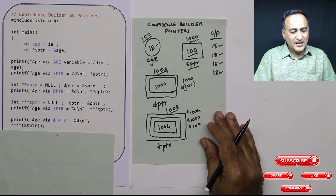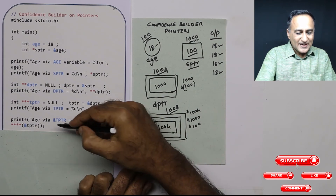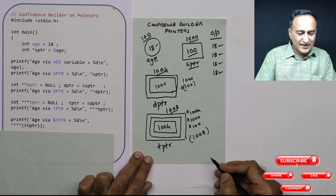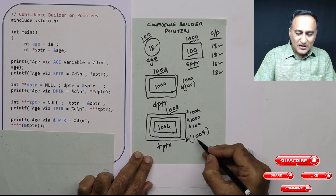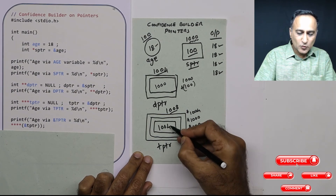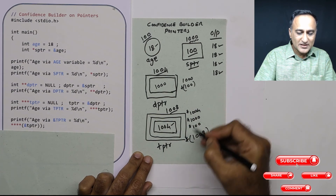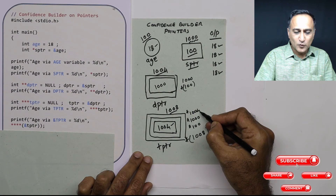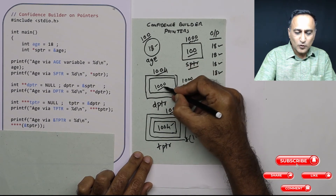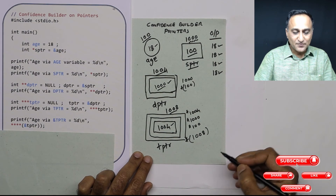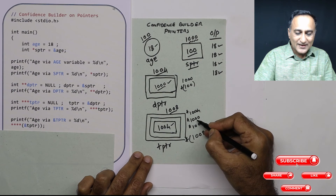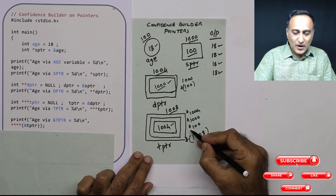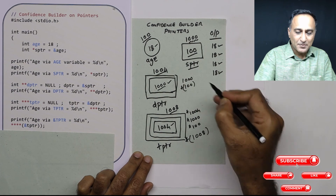Now let's try to print age using the address of tptr. The address of tptr is 1008. The first star gives me the value at 1008, which is 1004. The next star tells me what is the value or content at 1004, which happens to be address 1000. The third star tells me what is the value or content at address 1000, which is address 100. Finally, the last star tells me the value or content at address 100, which is 18.